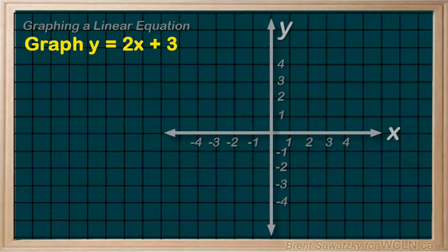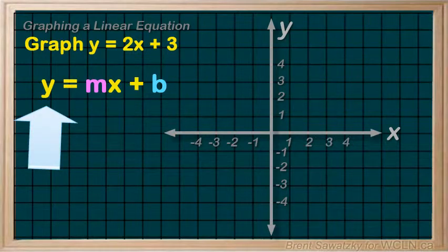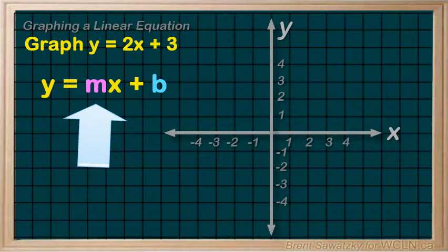And it's always true that if our equation is in the form y equals mx plus b—that is, the y is by itself on the left hand side and some number, our m, is multiplied by x or whatever variable we're using.